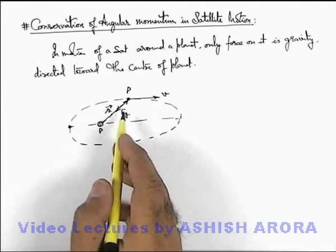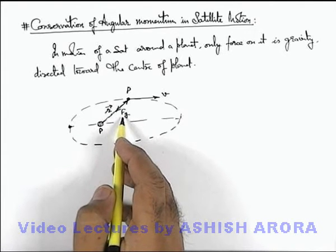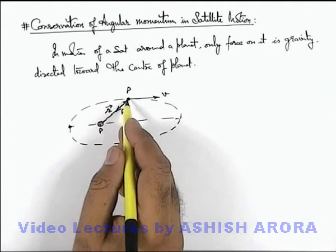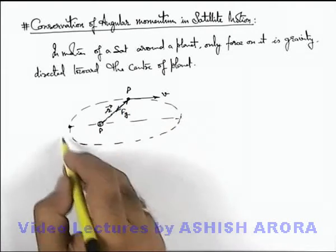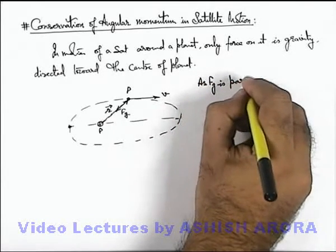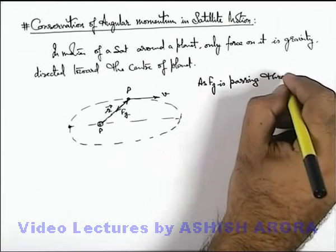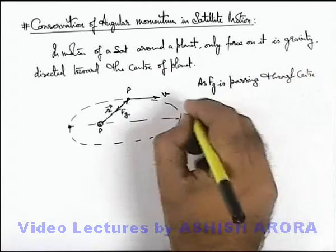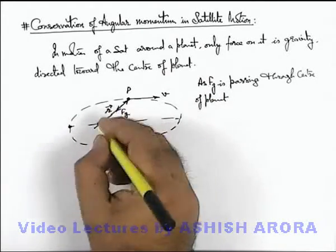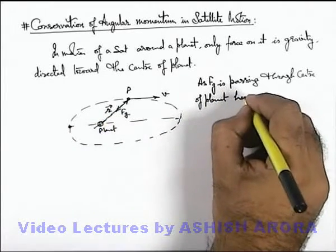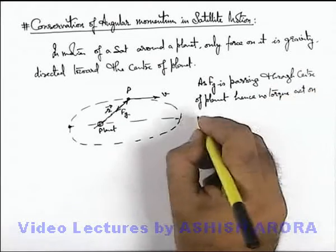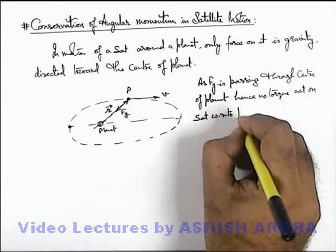In this situation, the force of gravity is passing through the position of the planet, so no torque of gravity will act on the satellite revolving around the planet. Since F_g is passing through the centre of the planet — the line of action of F_g passes through the planet — hence no torque acts on the satellite with respect to the planet.